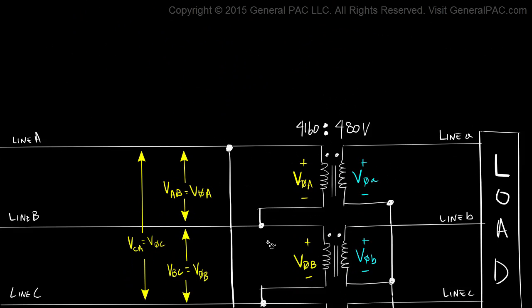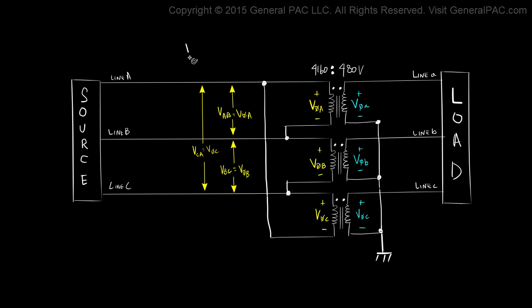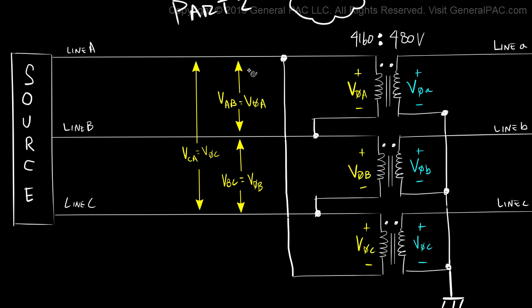Let's scroll down and look at what we've done in the past. In Part 2 of this video, which you'll find a link right here, we talked about the line-to-line voltage versus phase voltage relationship for both the Delta connection as well as the Y or star connection. Make sure you review Part 2 if you're having a hard time recalling. When we measure the line-to-line voltage between line A and line B, that's essentially equal to phase A voltage. Similarly, between line B and line C equals phase B voltage, and between line C and line A equals phase C voltage.